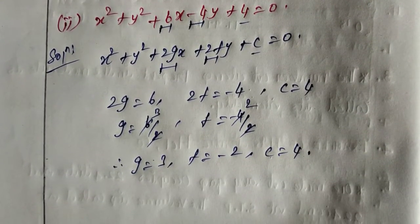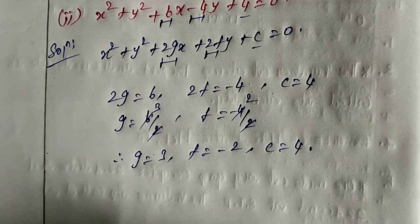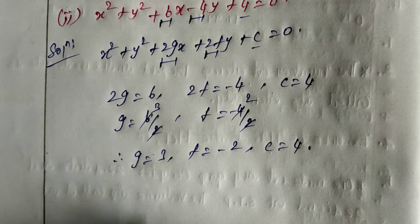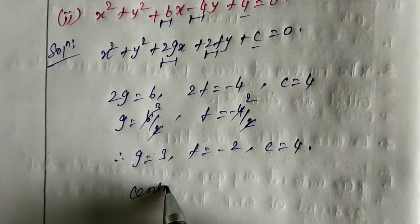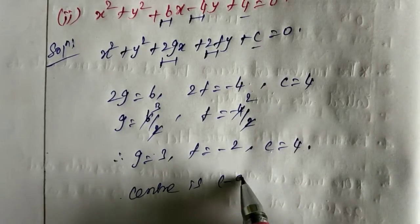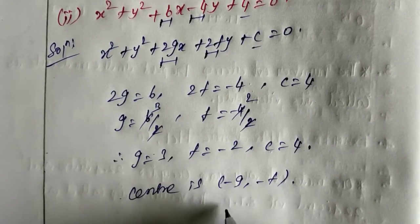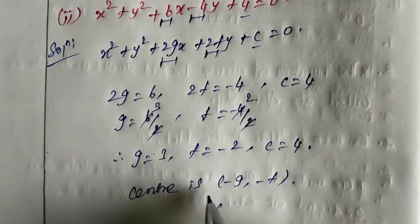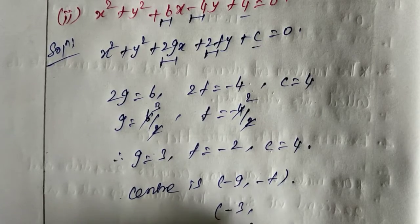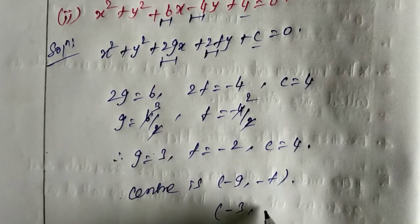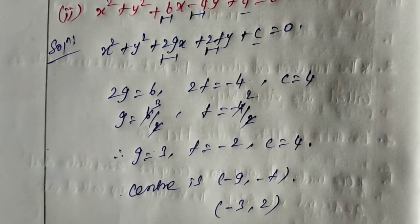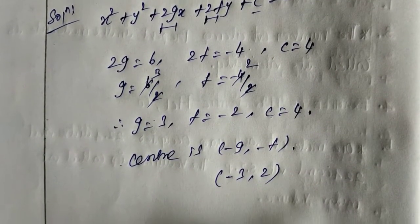Center: the formula for center is minus g comma minus f. So center is minus g comma minus f. g equals 3, so minus 3. f is already minus 2, so minus into minus gives plus. Therefore center is (minus 3, 2).